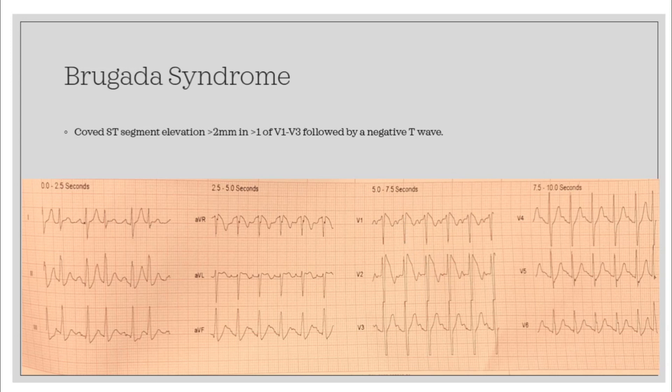To be diagnosed with Brugada syndrome, the Brugada sign must be associated with one of the following six criteria: documented V-fib or polymorphic V-tach, family history of sudden cardiac death at less than 45 years old, coved-type ECG in other family members, syncope, nocturnal agonal respirations, or inducibility of V-tach with programmed electrical stimulation. Those are the only ways to actually diagnose Brugada syndrome, but if you have a patient with this coved morphology and T wave inversions, they have a Brugada sign — bring it to the ER physician's attention.